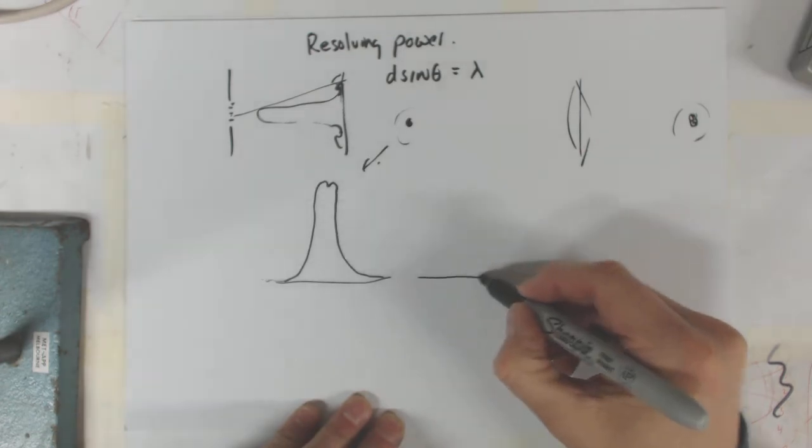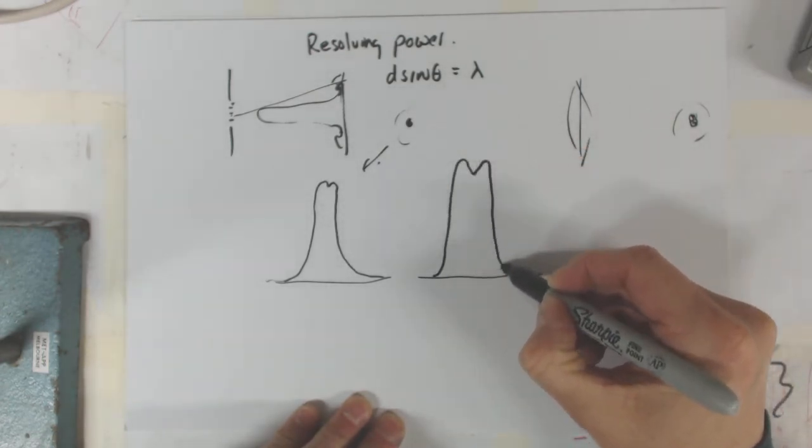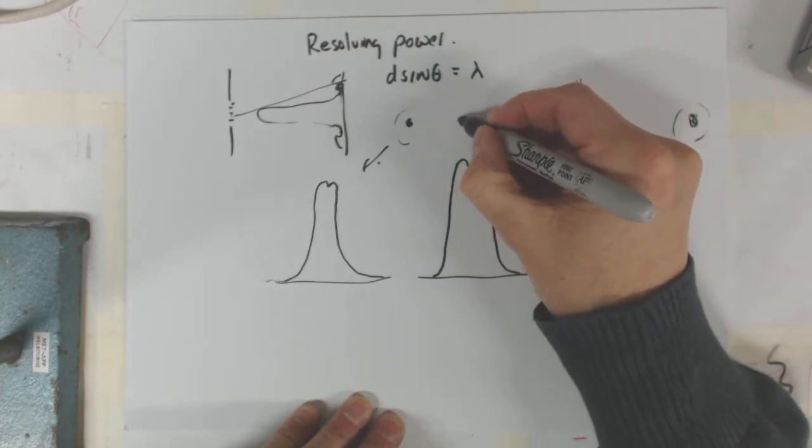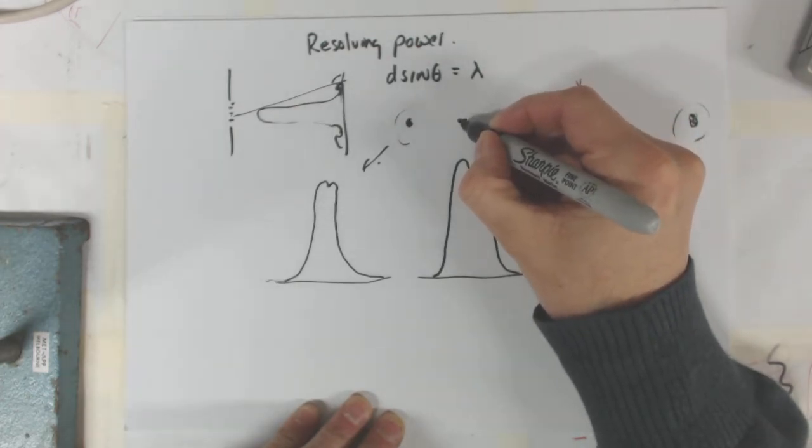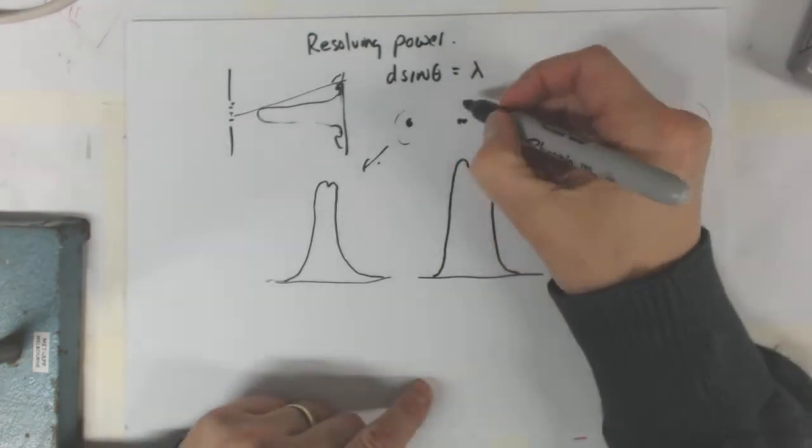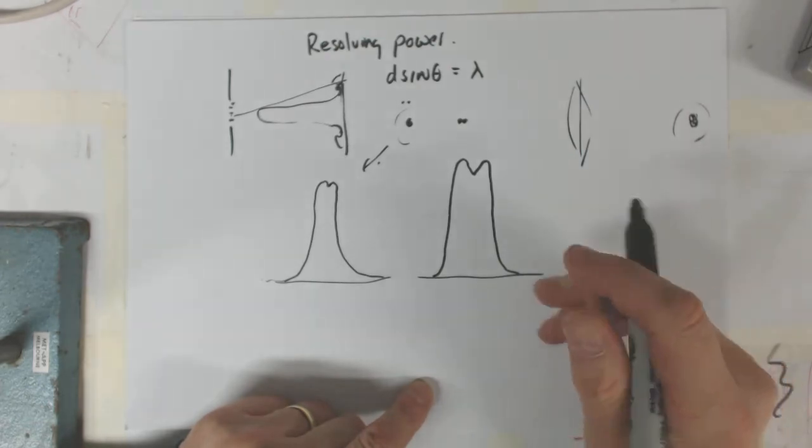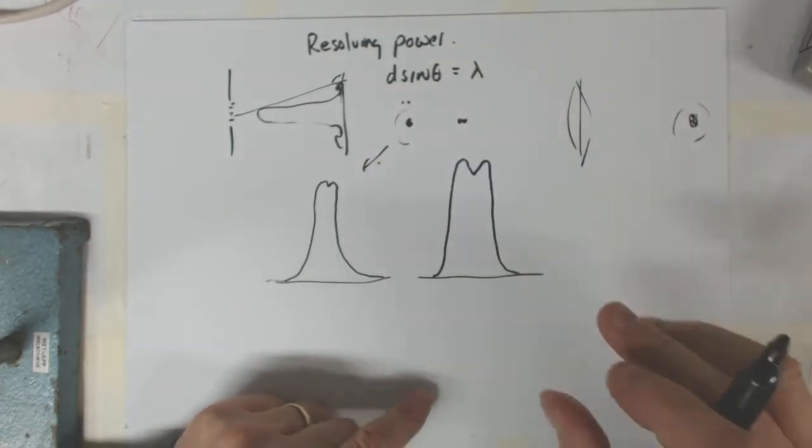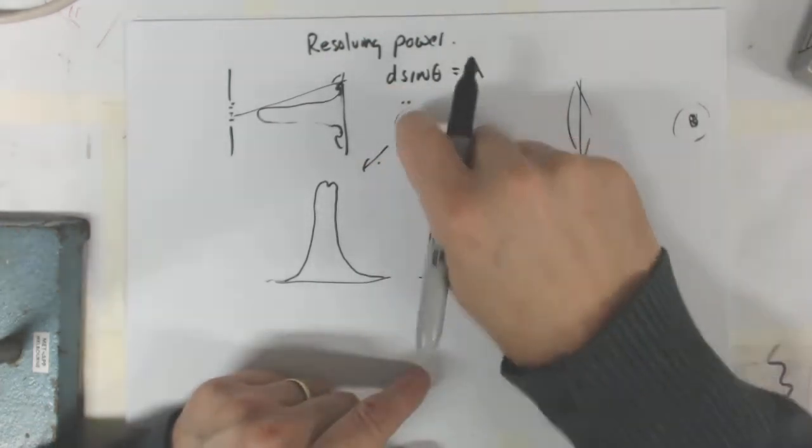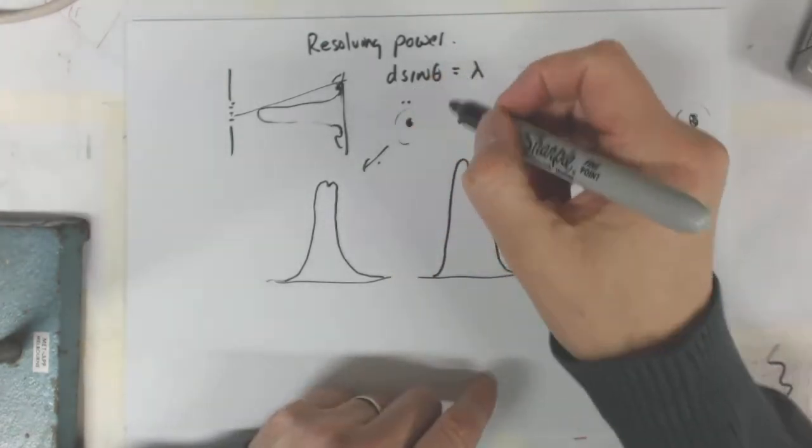If you get a diffraction pattern, if the two diffraction patterns are slightly more off, then you can sort of make out the two objects. That's your image. The two objects actually are separate, so your object actually is like that, but your ability to resolve them, we're saying they're two objects.